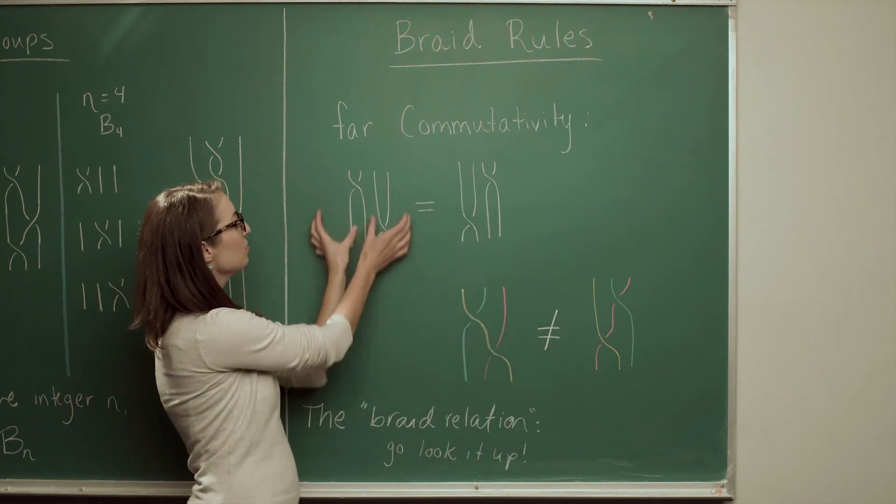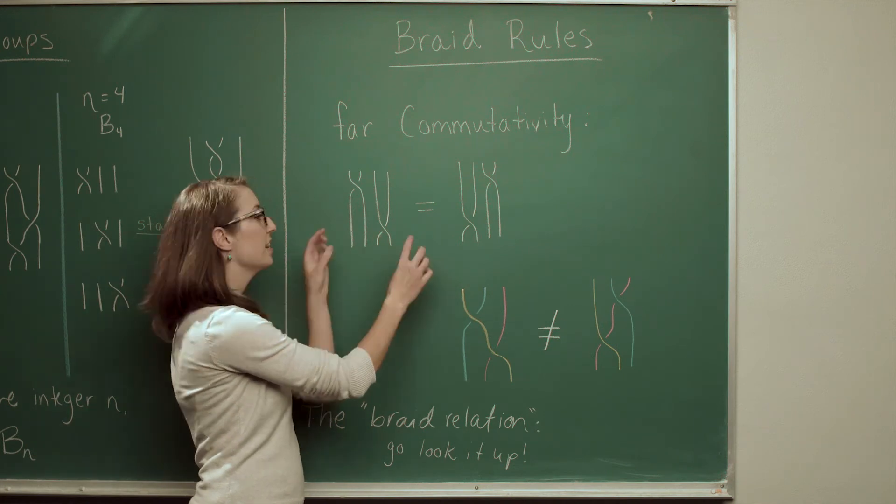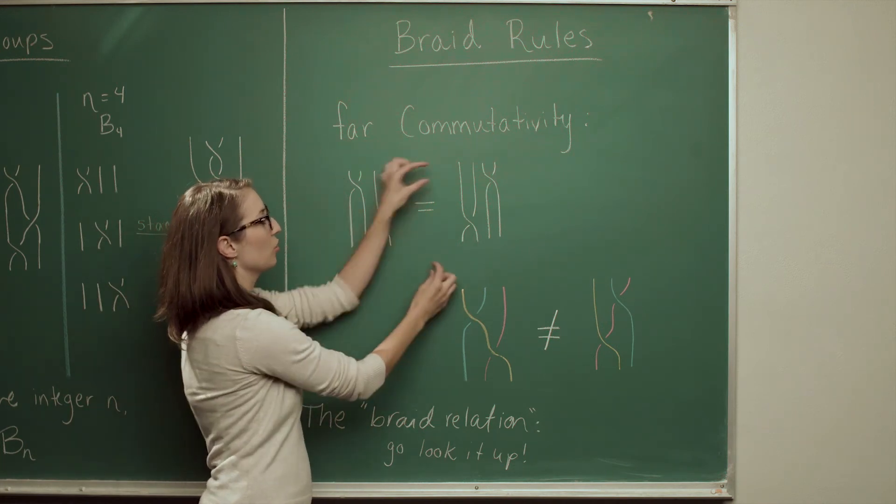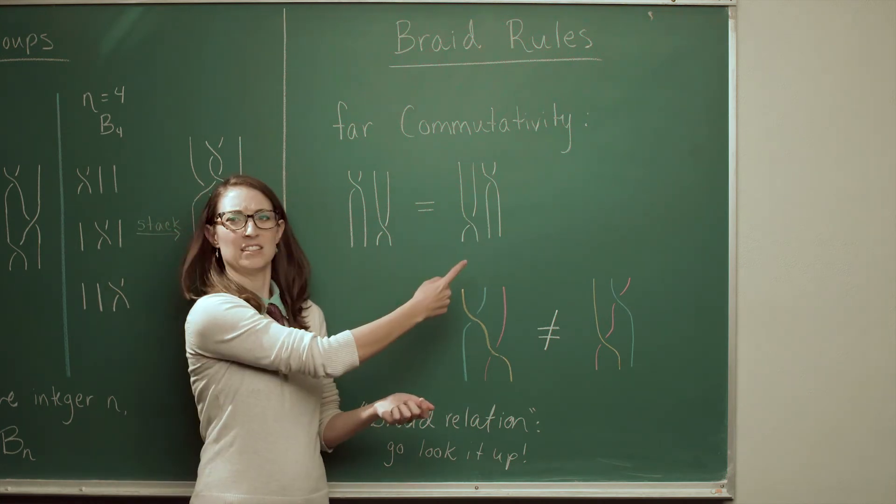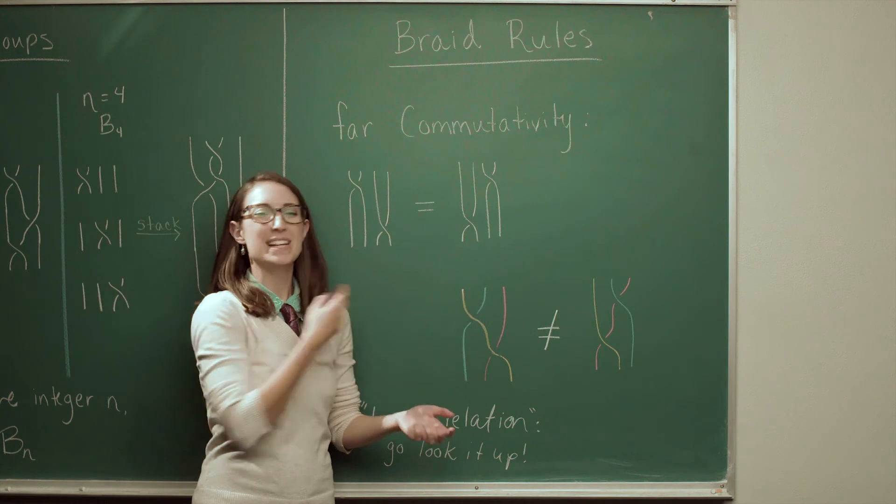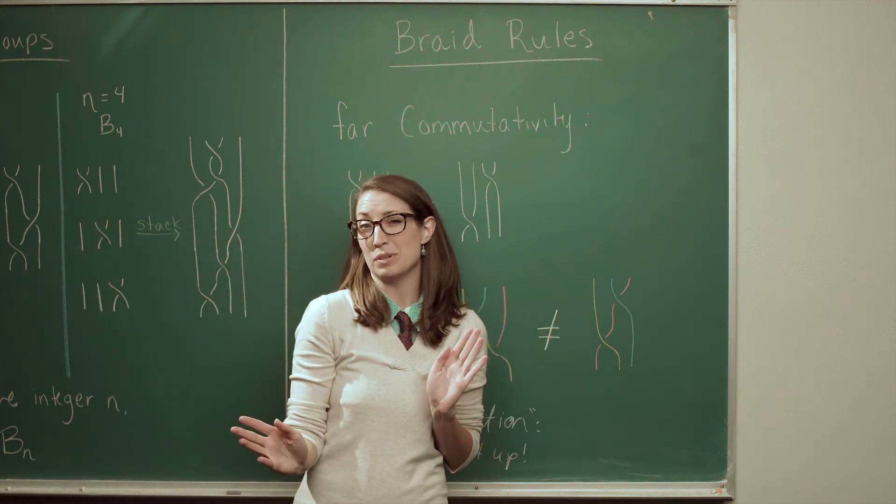So if I have two sets of strands that are disjoint, like they're far apart from each other, they don't interact, then changing the order that the crossings occur actually keeps the braid the same. It might look a little different, I've drawn it a different way, but I didn't actually change the braid in reality. I just sort of drew it a little differently.